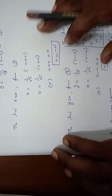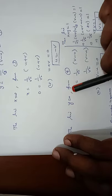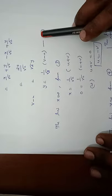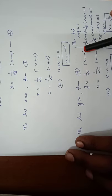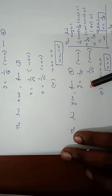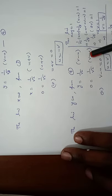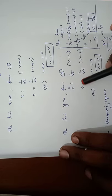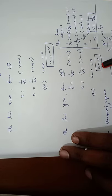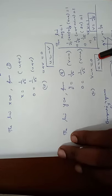The second line y equal to 0 is applied in equation number 4: 0 equals 1 by root 2 into v minus u. This gives v minus u equal to 0, so u equal to v.